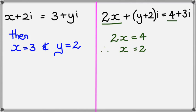And of course, the imaginary part, which is y plus 2i, should equal 3i, which means y plus 2 should equal 3, which means in this case, y is equal to 1.